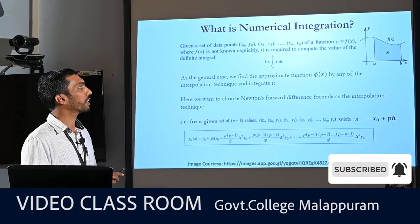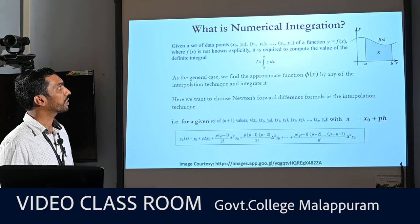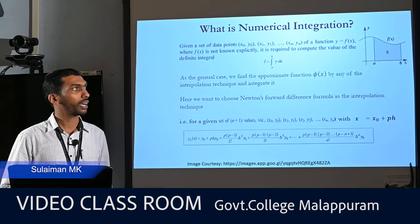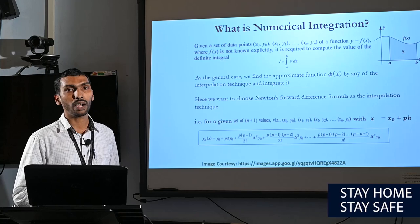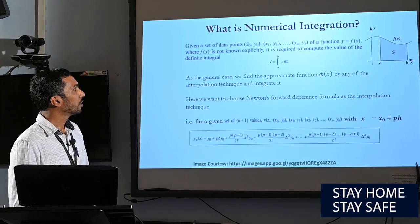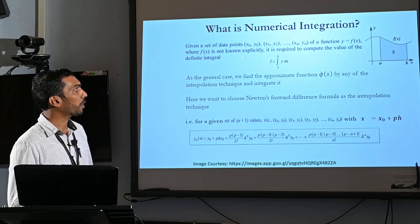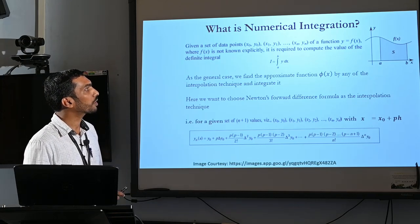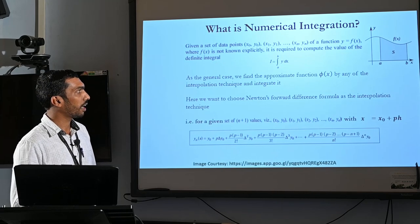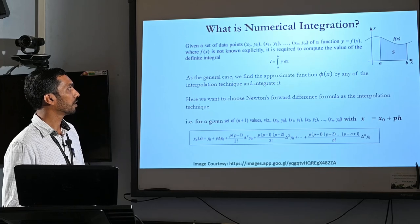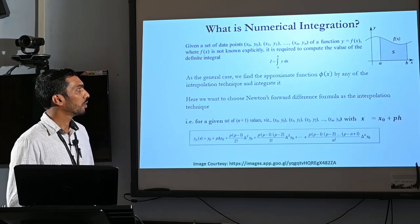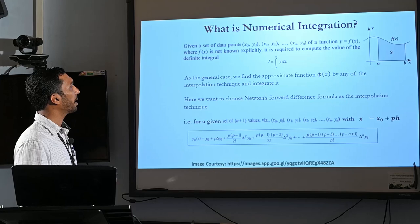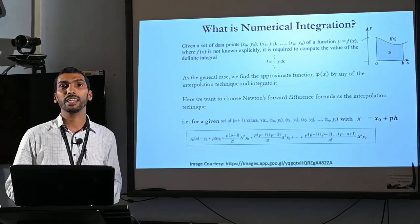First we will see what is numerical integration. Suppose we are given a set of data points x_i, y_i — that is x0, y0 up to xn, yn — of a function y equal to f. But f is not known explicitly; we don't know the form of f explicitly. It is required to compute the value of the definite integral from a to b of y dx. As the general case, we first find the approximate function phi of x, which is one kind of interpolation, by any of the interpolation techniques, and then integrate this function.